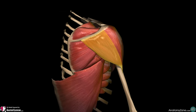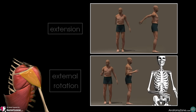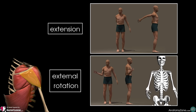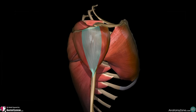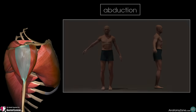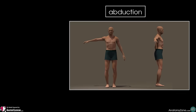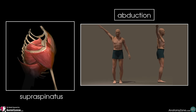The posterior fibres do the opposite — they extend the shoulder and cause lateral rotation or external rotation of the humerus. The posterior fibres act synergistically with the trapezius and teres major muscles. The lateral fibres arising from the acromion are powerful abductors of the shoulder and are assisted by the supraspinatus of the rotator cuff in this movement.